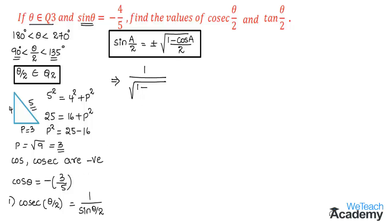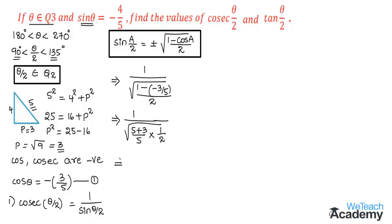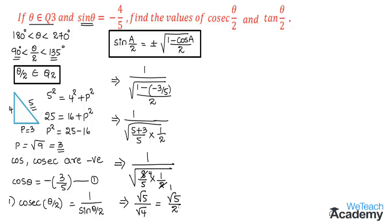Let us name cos theta equals minus 3 by 5 as equation 1. Replacing cos theta with minus 3 by 5, we get 1 divided by under root of 1 minus (minus 3 by 5) divided by 2. Taking 5 as the LCM gives 5 plus 3 over 5, divided by 2, which simplifies to 1 by under root of 8 over 10, which equals 1 by under root of 4 by 5, giving root 5 divided by root 4, so the value is root 5 by 2.